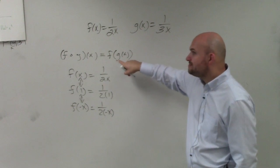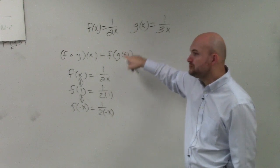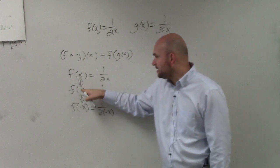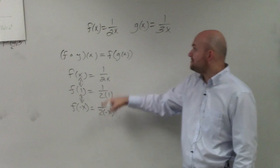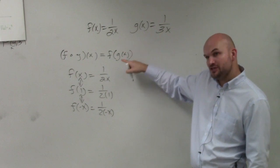So all this function is saying is my new input is g of x. So instead of plugging in 1, instead of plugging in negative x, I'm now plugging in g of x.